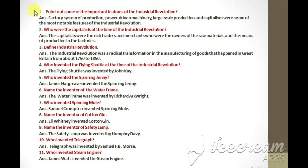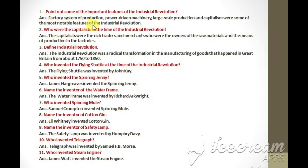The first question is: point out some of the important features of the Industrial Revolution. Factory system of production, power-driven machinery, large-scale production, and capitalism were some of the most notable features of the Industrial Revolution.